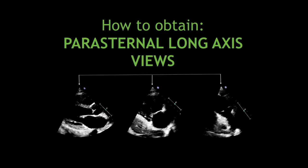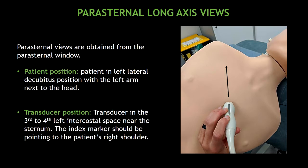Hello guys, in this video I'm going to show you how to obtain the different parasternal long axis views. Parasternal long axis views are obtained from the parasternal window. The patient has to be in the left lateral decubitus position with the left arm next to the head. Place the transducer in the 3rd to 4th left intercostal space near the sternum. The index marker should be pointing to the patient's right shoulder.